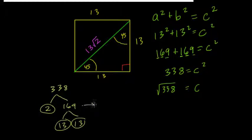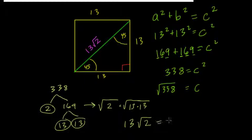What does that mean? Well, that means that the square root of 338 is equal to the square root of 2 times the square root of 13 times 13. What's the square root of 13 times 13? Well, that's just going to be 13. And 13 times the square root of 2. So that equals c.